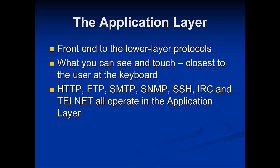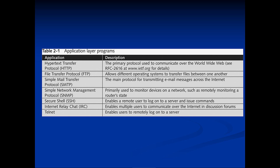The Application layer is the front end to the lower layer protocols — the layer we can interact with, closest to the user at the keyboard. It deals with applications like HTTP, HTTPS, FTP, SMTP, and SSH. For example, HTTP is used for web traffic, FTP is for file transfer, SNMP is the Simple Network Management Protocol, and so forth.